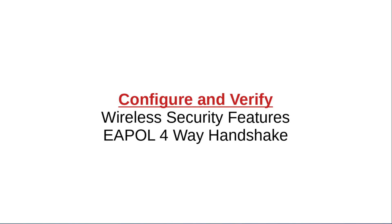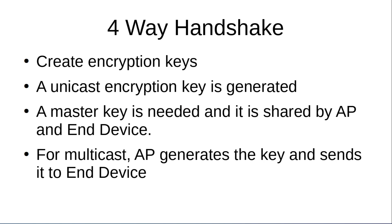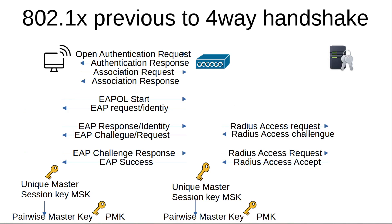Let's talk about the EAP four-way handshake. The purpose of the four-way handshake is to create encryption keys in order to have secure encrypted communications between the wireless end devices and the access point. Each end device will have its own set of keys. These keys must work for unicast and multicast traffic.